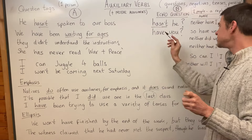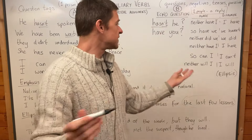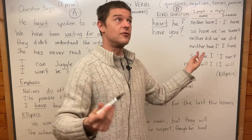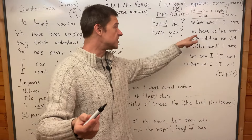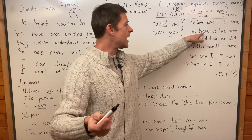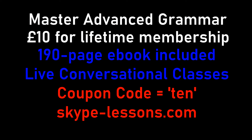Notice this first sentence is positive, so the echo question is also positive: 'We have been waiting for ages — have you?' And if you want to say that you have also been waiting for ages, you say 'So have we.'